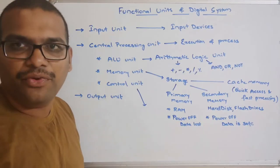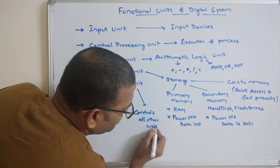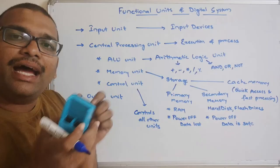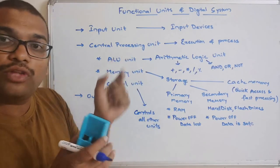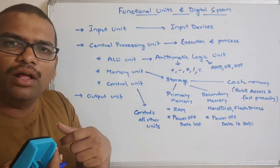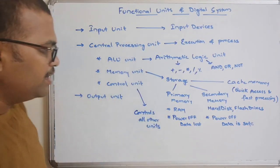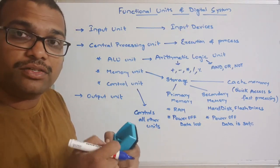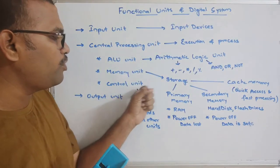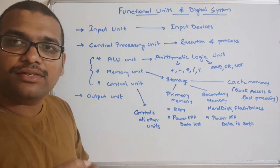The control unit — the name itself indicates it controls all other units. If our instructions have arithmetic operations, that instruction should be sent to the ALU. What the ALU should do, what the memory should do, what the input unit should do — all of that control is under the control unit. It is responsible for giving instructions to all other units.